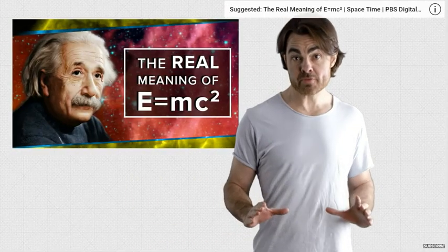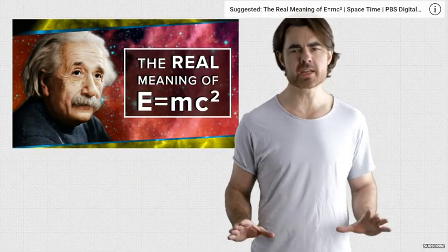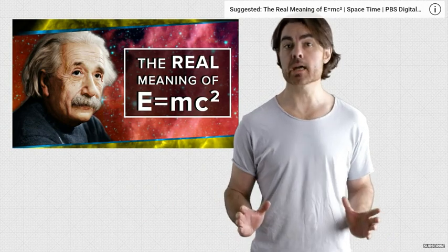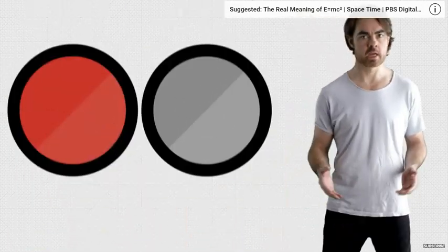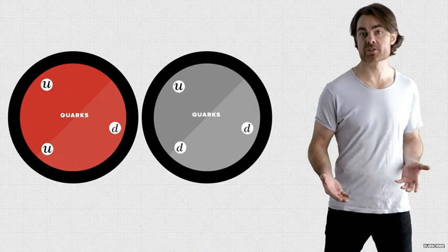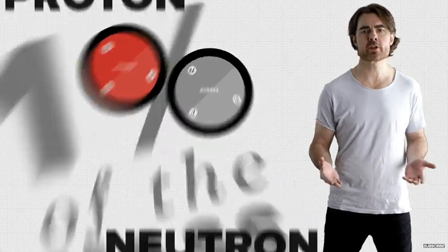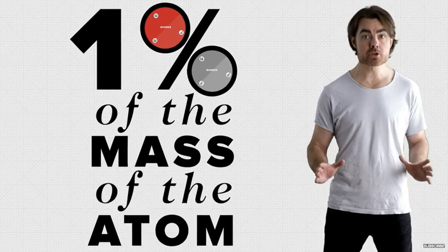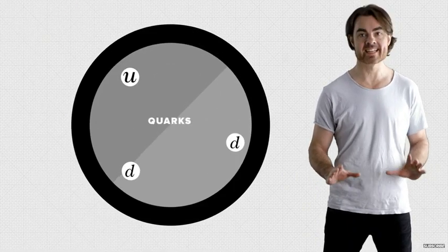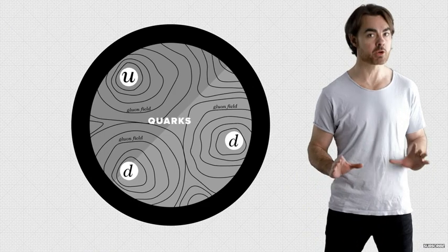Most of the mass in your body, in fact the mass of anything that's made of atoms, doesn't come from the mass of the elementary particles. The electrons and the quarks that comprise protons and neutrons do seem to have intrinsic mass, but this is only around 1% of the mass of the atom. Most of the atom's mass is the confined kinetic and binding energy of those quarks.